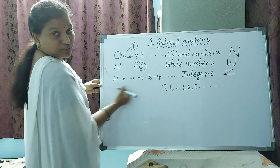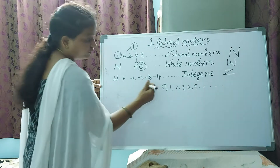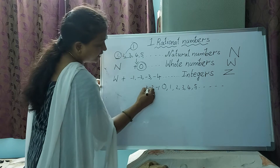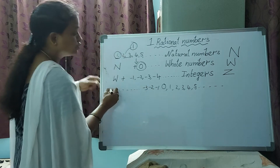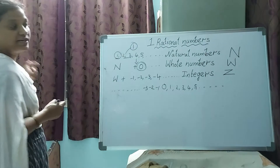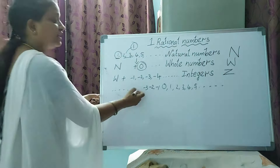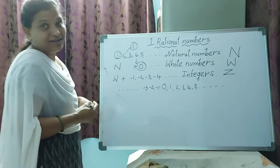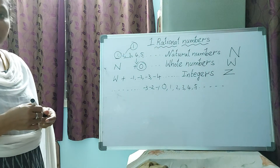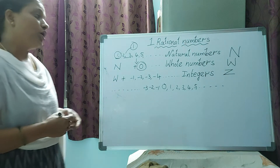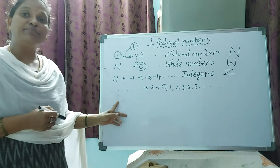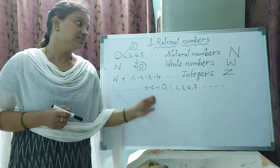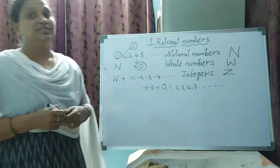Negative numbers are written as minus 1, minus 2, minus 3, and so on up to infinity. Positive numbers, negative numbers, plus 0 — we call this integers. Integers are denoted by Z.